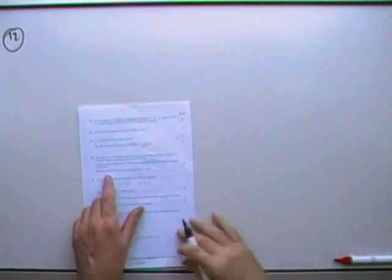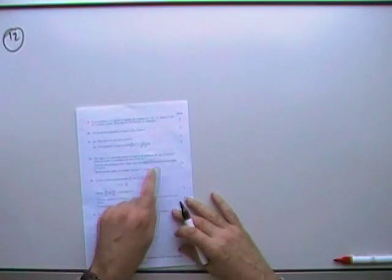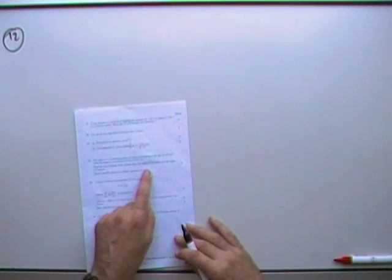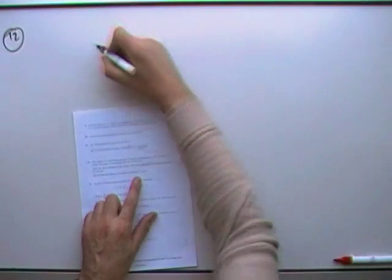Question 12. Related rates of change here. But there's two things changing - R's changing and the height's also changing. Find the rate of change of volume when the radius is this and the height is that, and it gives you the rate of change. So it's a cylinder.